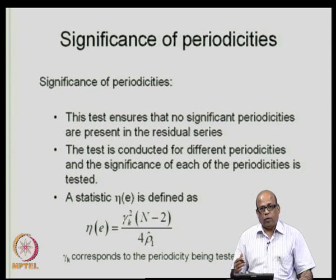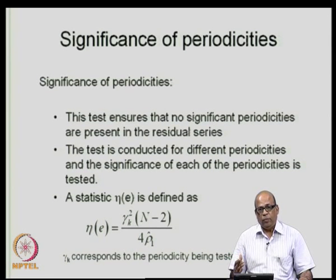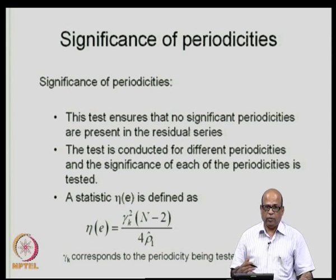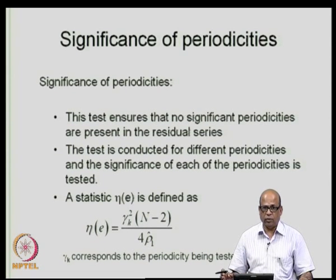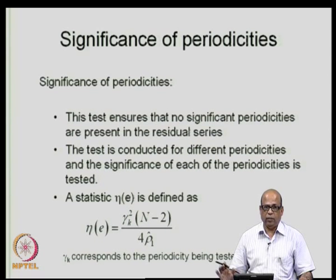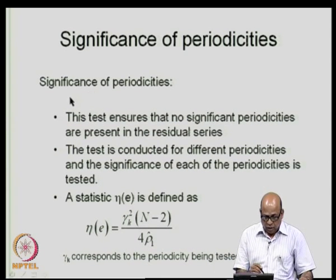That was the test for significance of the mean. The mean may be zero, but periodicities may still be present in the residuals. The residual series obtained from the model should be devoid of any periodicities. Therefore we look for significance of periodicities — the residual series should not have any significant periodicities present.